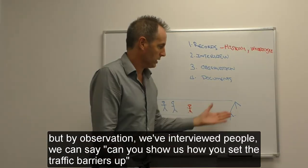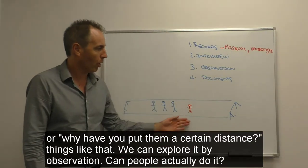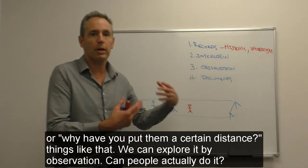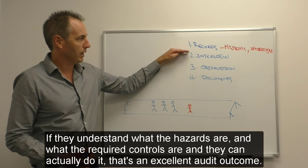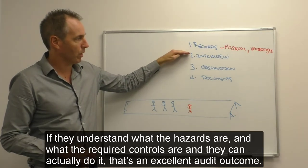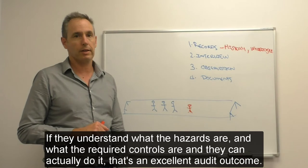So again, it's not a personal test, but by observation we've interviewed people and we could say, well yeah, could you show us how you set traffic barriers up, or why have you put them a certain distance? Things like that we can explore by observation. Can people actually do it? If I understand what the hazards are and what the required controls are, and they can actually do it, that's an excellent audit outcome, particularly if there's records to back that up.